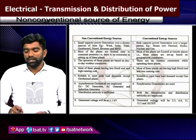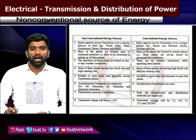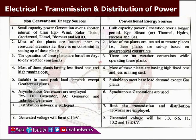There are no weather constraints while operating conventional plants. Most non-conventional plants have less fixed cost and high running cost. But conventional plants have high fixed cost and less running cost. Non-conventional sources are suitable for peak load demands, except geothermal plants, while conventional sources are suitable to meet base demands.